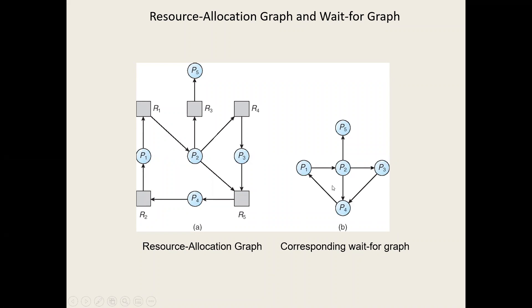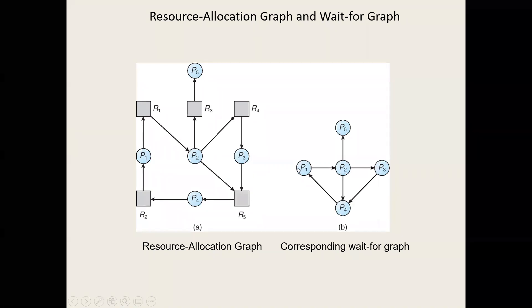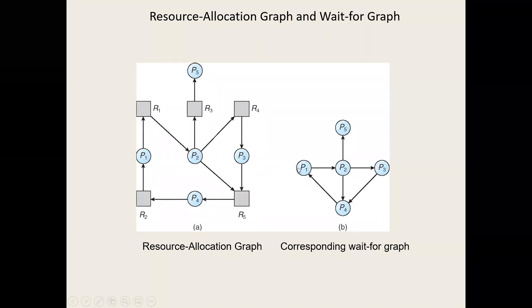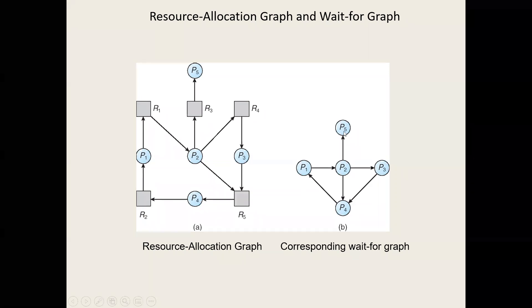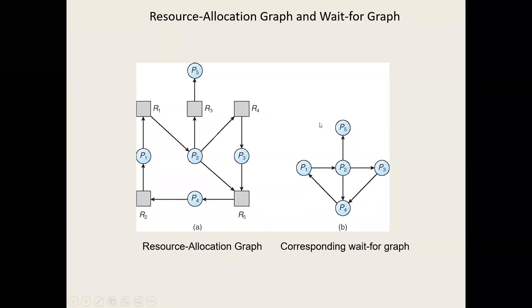There is a cycle connecting P1, P2, P3, P4, and again back to P1. So there is a cycle. But P5 can complete. You can see in the resource allocation graph that P5 requires only R3, and R3 is already assigned, so P5 can complete.